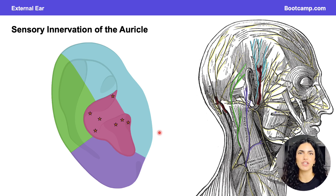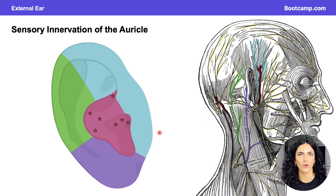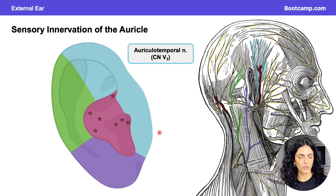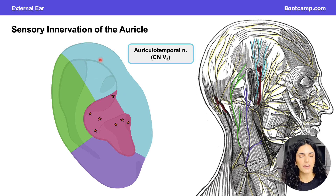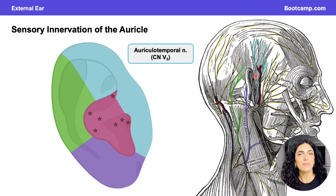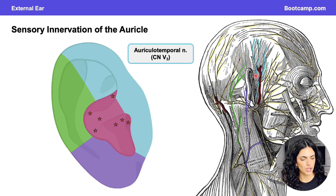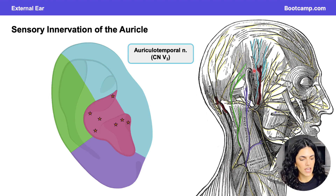Next, we'll talk about the sensory regions of the auricle. Along the more anterior aspects — including the tragus and superiorly along the ear — innervation is provided by the auriculotemporal nerve, a branch of the mandibular branch of the trigeminal nerve. The mandibular branch is found in the infratemporal fossa. The auriculotemporal nerve comes off posteriorly, sweeps upward, ascends along the anterior aspects of the ear and the temples with the superficial temporal artery, and gives off sensory branches to innervate the auricle.